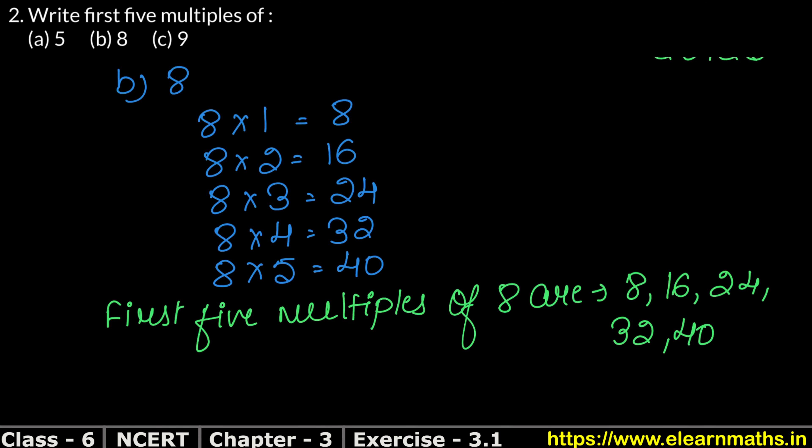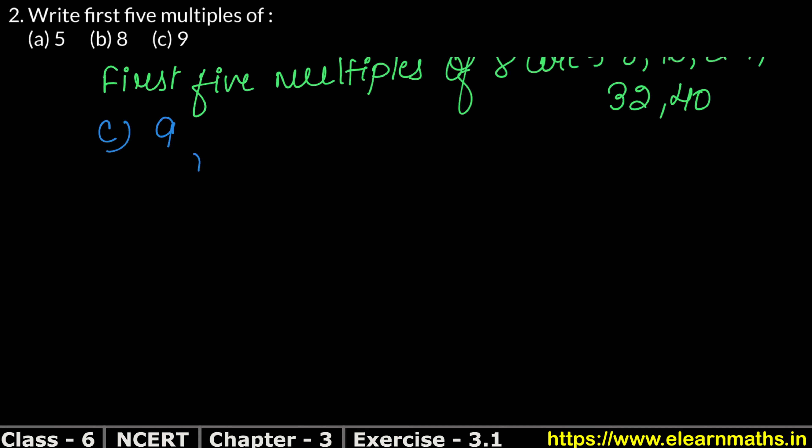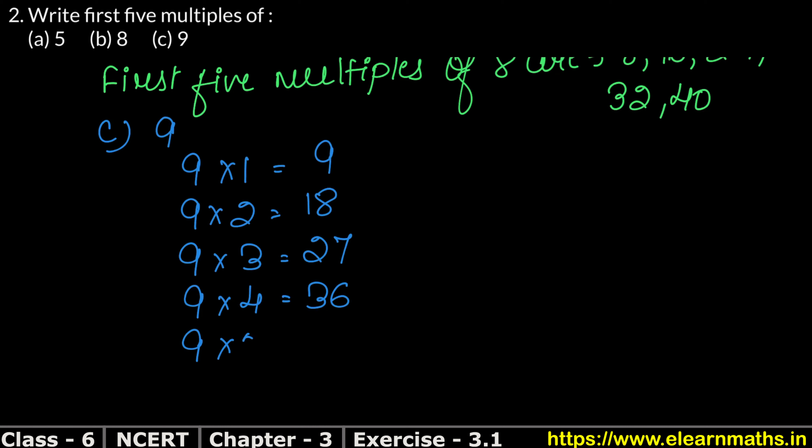Let's do the 3rd part now. The 3rd part is multiples of 9. We will write the 9 multiples: 9 multiplied by 1 is 9, 9 times 2 is 18, 9 times 3 is 27. Then we multiply 9 by 4, which gives 36.